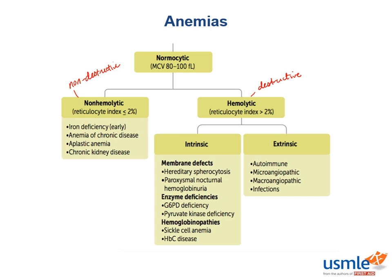Our non-hemolytic normocytic anemias include aplastic anemia, chronic kidney disease, anemia of chronic disease, and early iron deficiency. This is an important distinction because we already mentioned iron deficiency fits as a microcytic anemia, but if iron deficiency is very early in the process, it's actually non-hemolytic normocytic. Aplastic anemia and chronic kidney disease result in decreased red blood cells because the body cannot produce them — either the bone marrow is aplastic or the kidneys have failed to produce erythropoietin. Anemia of chronic disease and iron deficiency start off as normocytic but progress to microcytic, and neither results in breakdown of red blood cells, so there's nothing telling the body to produce more — hence the low reticulocyte count.